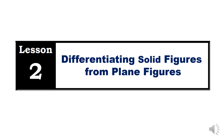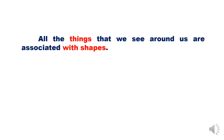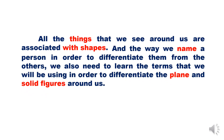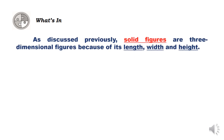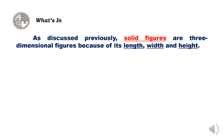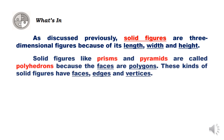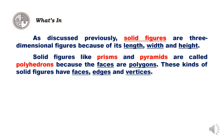All the things we see around us are associated with shapes. Just as we name a person to differentiate them from others, we also need to learn the terms we will use to differentiate the plane and solid figures around us. Solid figures are three-dimensional figures because of their length, width, and height. Solid figures like prisms and pyramids are called polyhedrons because their faces are polygons.